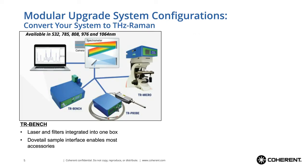The modular systems are all very similar to each other. You can see three different versions we offer: the TR Bench, the TR Pro Micro, and the TR Pro. What they have in common is that they all combine a stable wavelength laser chosen to meet your specific application needs and include all the internal filters required to precisely block only the Rayleigh scattered light and extract all of the Raman signals — both Stokes and anti-Stokes — then coupled into an optical fiber for connection to virtually any spectrometer.